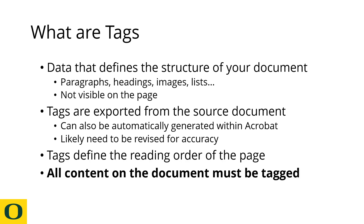Acrobat does have an automated tag tool. It's not going to be as accurate as what you would export from Word, but it is useful if you have something like a scanned document or an image of a journal article. First, you run the optical character recognition tool — it identifies the text on the document — and then you can use the automated tagging tool to create tags from this content. Tagging isn't perfect, so I'll show you a couple of ways of manually editing tags.